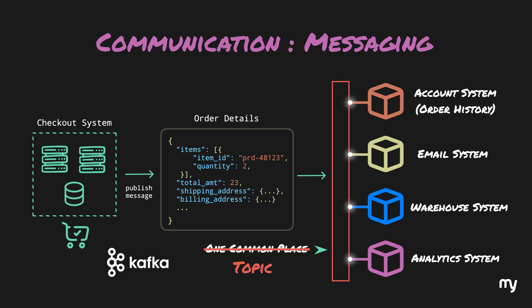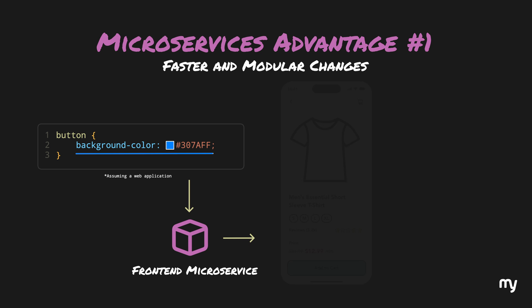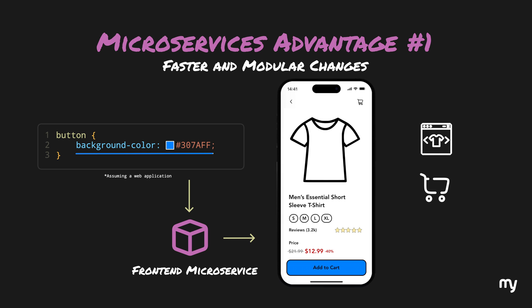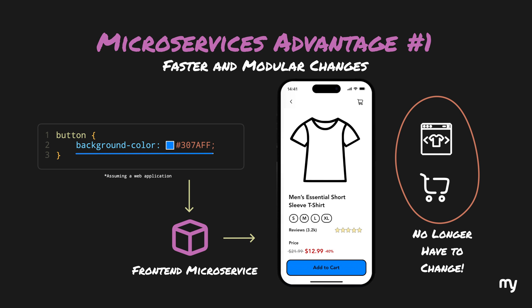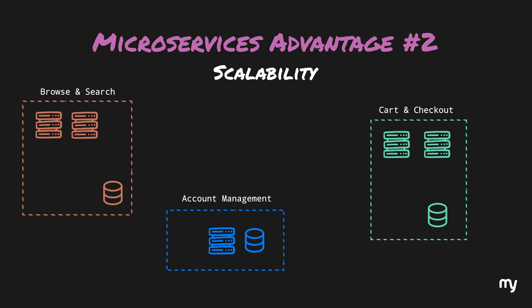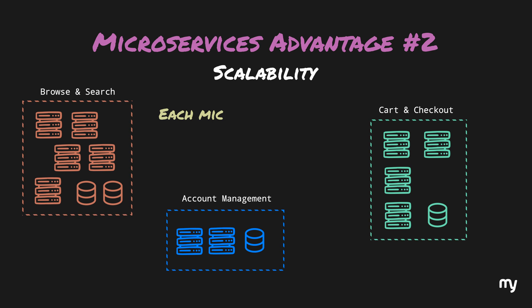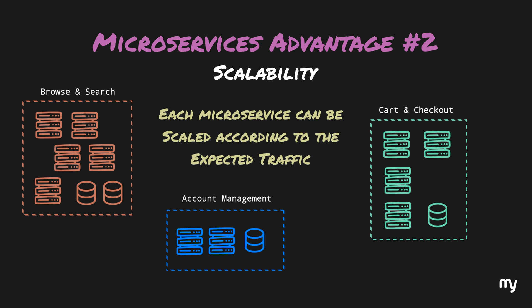Once microservices are separated and communication is correctly established, we can talk about how they solve the problems discussed earlier. Remember the button color change example? With microservices, we no longer have to repackage the whole application — we just repackage the smaller chunk that deals with the front end. Other features like browse, search, cart, and checkout don't need to be touched. This also enables us to ship features much faster. With better modularity, it becomes feasible to scale up certain parts independently — browse and search, cart and checkout, and account management can all be scaled separately according to expected traffic.